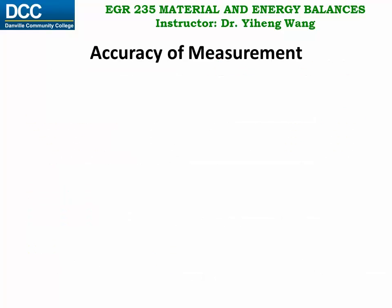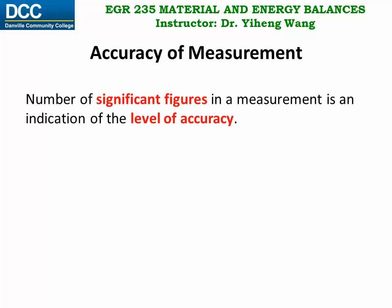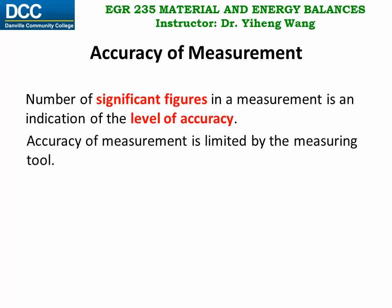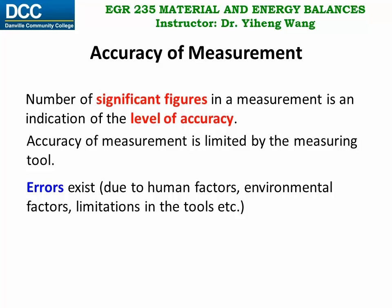We need to start the discussion with the accuracy of measurement, because the number of significant figures in a measurement is an indication of the level of accuracy. The level of accuracy of measurement is limited by the measuring tool we use, and although more advanced tools can provide more accurate measurement, errors always exist. There are many causes for error, such as human factors, environmental factors, or the limitations in the tools we use. Errors, however, are not mistakes. It is important to understand that, unlike mistakes, errors are inevitable.